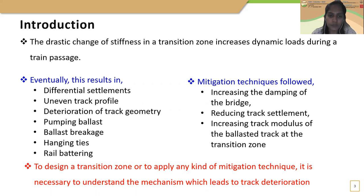The support condition of the track is soft on earth while it is stiff on a bridge and similar infrastructure. This variation in support condition leads to a drastic change in vertical stiffness. This phenomenon increases dynamic loads during train passage over a transition zone, eventually resulting in differential settlements. If the transition zone is not designed properly, within a short period of time the rail track is subjected to uneven track profile and deterioration such as pumping of ballast, ballast breakage, and hanging ties. This increases maintenance frequency at areas with transition zones.